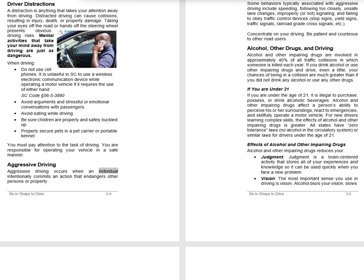Aggressive Driving: Aggressive driving occurs when an individual intentionally commits an action that endangers other persons or property. Some behaviors typically associated with aggressive driving include speeding, following too closely, unsafe lane changes, improperly or not signaling, and failing to obey traffic control devices (stop signs, yield signs, traffic signals, railroad-grade cross signals, etc.). Concentrate on your driving and be patient and courteous to other road users. Alcohol, Other Drugs, and Driving: Alcohol and other impairing drugs are involved in approximately 40% of all traffic collisions in which someone is killed each year. If you drink alcohol or use other impairing drugs and drive, even a little, your chances of being in a collision are much greater than if you had not. If you are under the age of 21, it is illegal to purchase, possess, or drink alcoholic beverages.